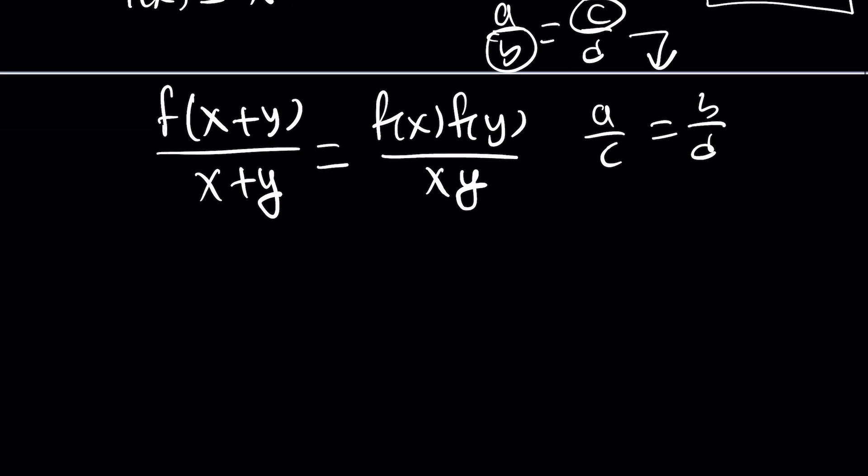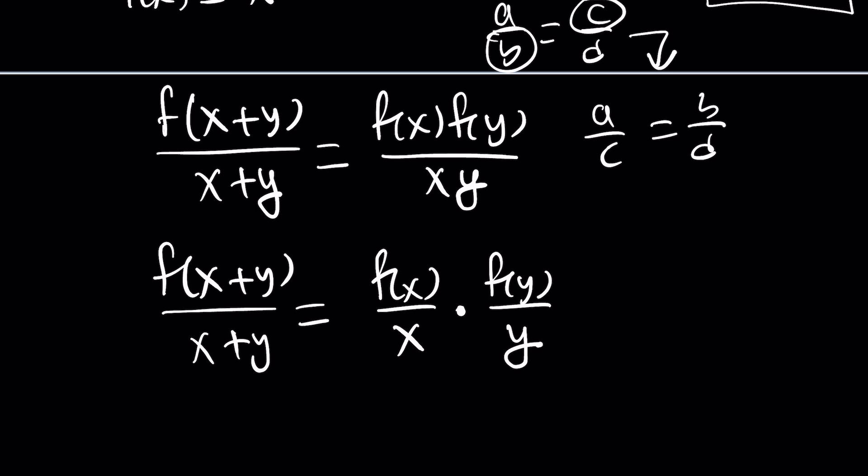Now, x plus y and x plus y are on the same side. That's a good thing. But, not only is that a good thing, there's another one. We can also split this into f of x over x multiplied by, because that's a product, f of y over y. Now, why is this important?